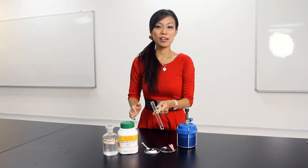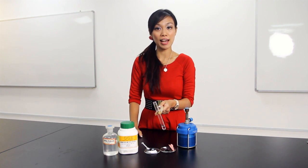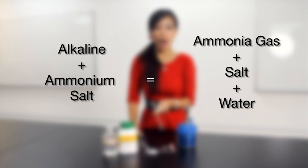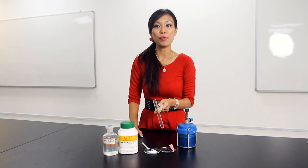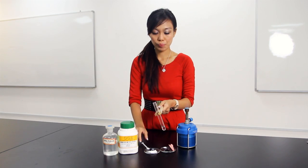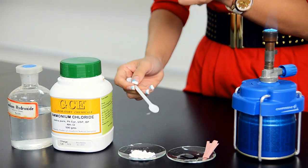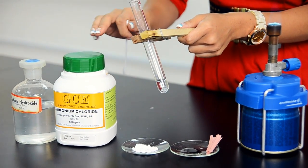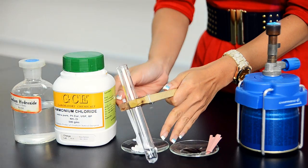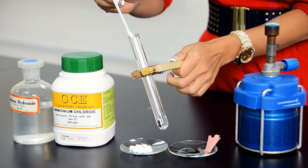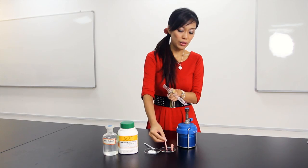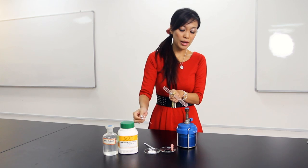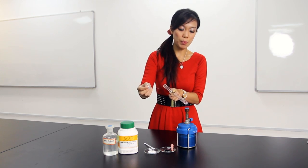Another very important reaction of alkaline is when alkaline reacts with ammonium salt — ammonia gas will be evolved. Ammonia gas can be tested with a red litmus paper; it will cause a damp red litmus paper to turn blue. I have with me here sodium hydroxide already placed inside this test tube, and I have ammonium chloride. When I react a little bit of ammonium chloride with sodium hydroxide, that will cause the red litmus paper to turn blue.